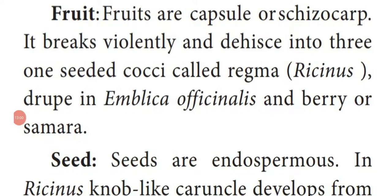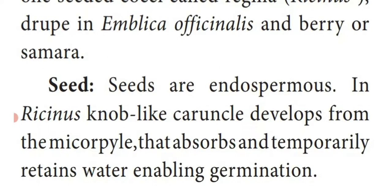Fruit: Capsule or schizocarp. It breaks violently or forcibly and dehisces into three one-seeded cocci called regma — in Ricinus communis. It is a drupe type of fruit in Emblica officinalis — that is gooseberry — and berry or samara in some. Seeds contain endosperm. In Ricinus communis, a small knob-like caruncle develops from the micropyle, which absorbs and temporarily retains water, enabling germination.